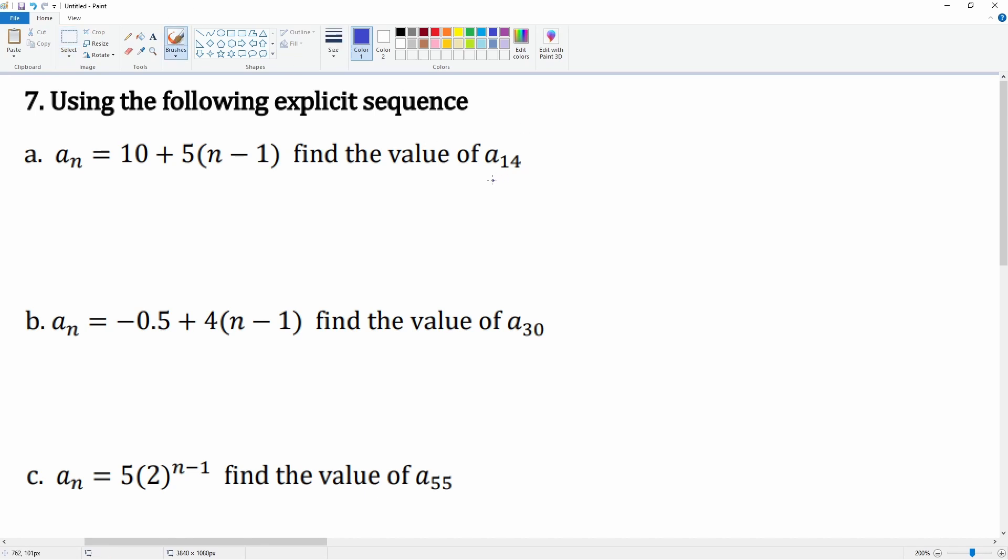So n is equal to 14. Watch as I rewrite the equation, but now the n disappears and I put down the 14. I just have to plug this into my calculator. Here, 10 plus 5 parentheses 14 minus 1, that gets me 75. So a₁₄, or my 14th term, is 75. That is the beauty of the explicit formula.